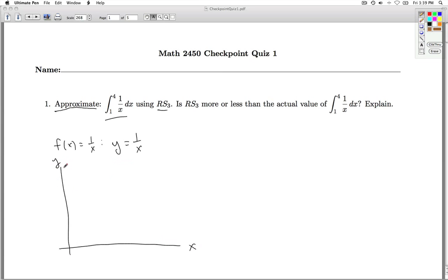Y equals 1 over x is one of these reciprocal functions. It looks something like that. And we're looking from the interval from 1 to 4. I'll call that x equals 1. I'll call that x equals 4.